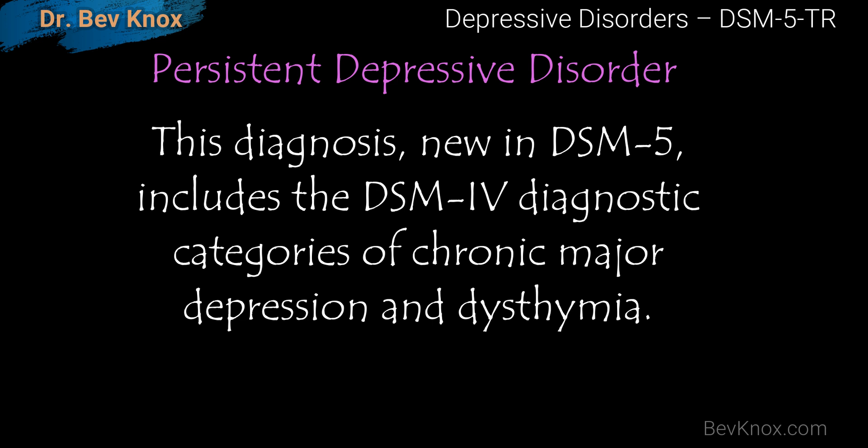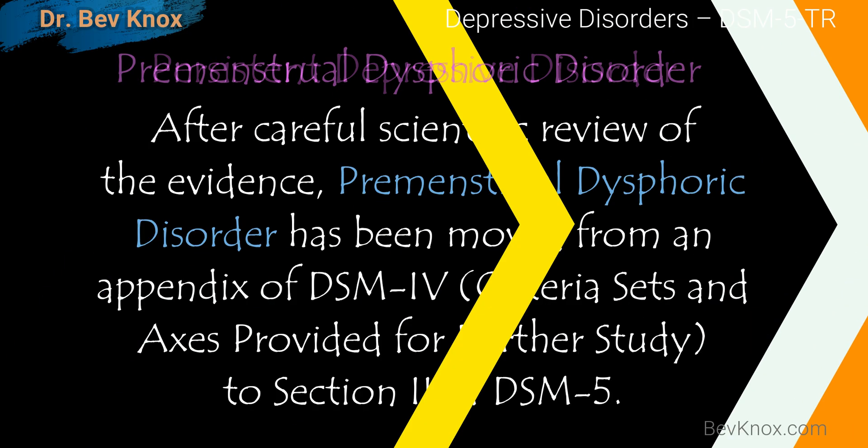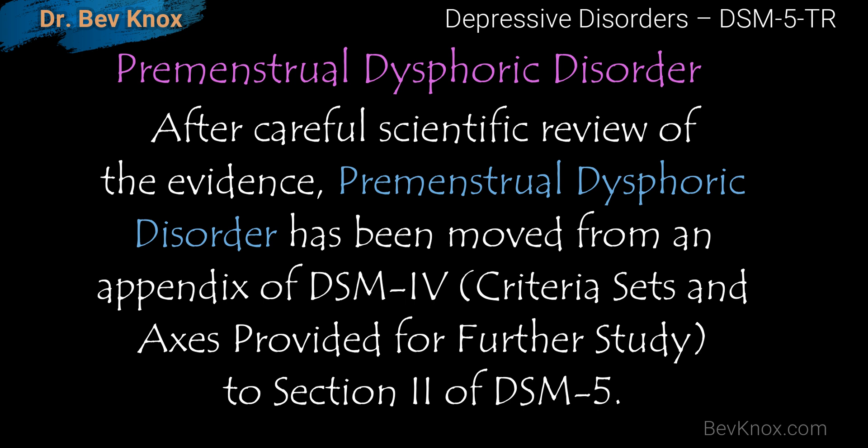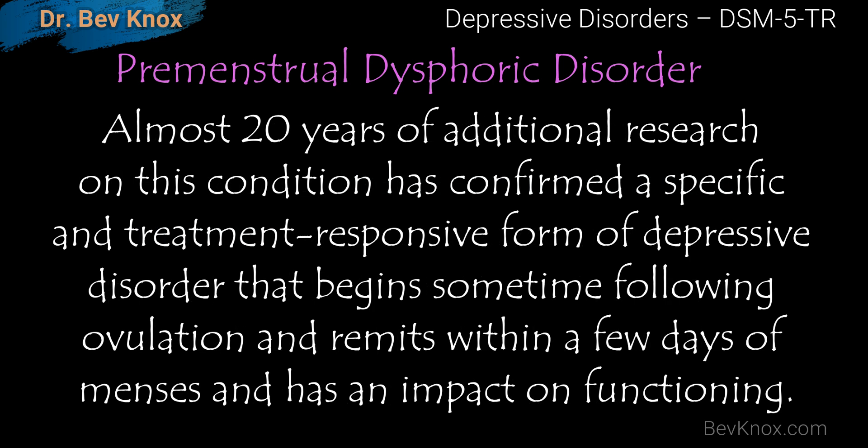This diagnosis, which is new to the DSM-5, includes the DSM-4 diagnostic categories of chronic major depression and dysthymia. After careful scientific review of the evidence, premenstrual dysphoric disorder has been moved from an appendix of DSM-4 — the criteria sets and axes provided for full study — to Section 2 of the DSM-5. Almost 20 years of additional research on this condition has confirmed a specific and treatment-responsive form of depressive disorder that begins sometime following ovulation and remits within a few days of menses, and has a marked impact on functioning.